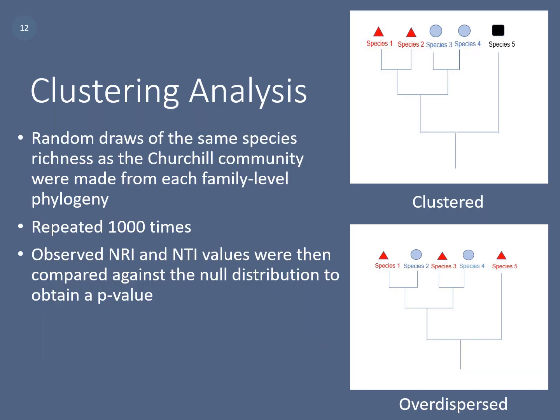Random draws of the same species richness as the target community were made from each family-level phylogeny, repeated a thousand times. The observed NRI and NTI values were then compared against the null distribution to obtain a p-value, and this is how we determined whether the families were clustered or over-dispersed.